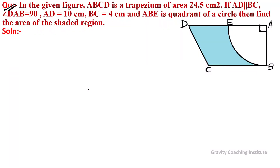In the given figure, ABCD is a trapezium of area 24.5 cm². AD is parallel to BC, angle DAB equals 90 degrees, AD equals 10 cm, BC equals 4 cm, and ABE is a quadrant of a circle. We have to find the area of the shaded region.